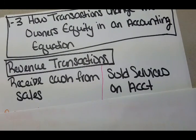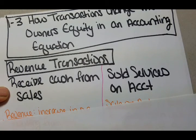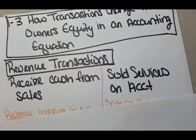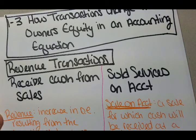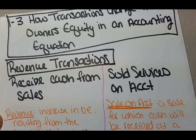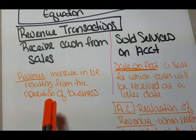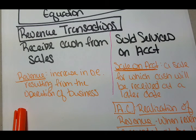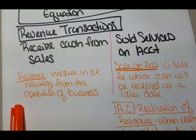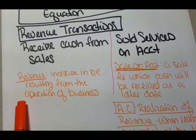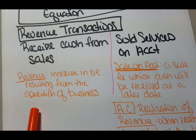We're going to first talk about revenue transactions. There are two different types: we're going to first receive cash from sales, and then we're going to record a transaction where we sold services on account. Revenue is your first definition you need to know. Revenue is very important for a business — it's an increase in the owner's equity resulting from the operation of a business. Anything that's a typical business transaction increasing owner's equity is called revenue, basically sales. Anytime you sell something, that's revenue — that's making money.